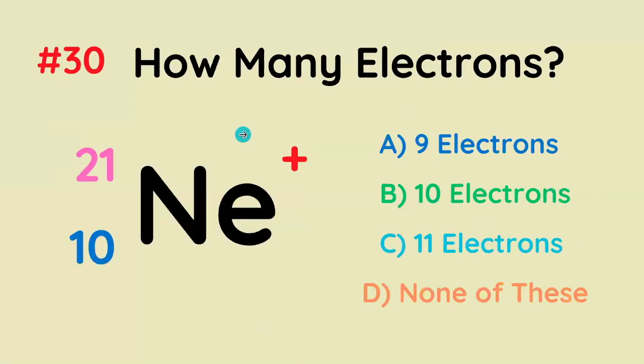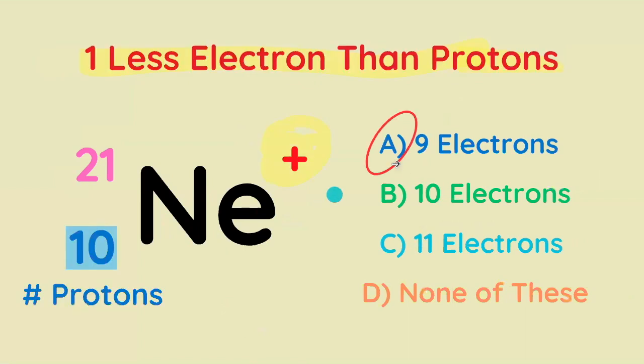How many electrons does this isotope of neon have? Nine, ten, eleven, or none of these? Nine, because if it has a positive one charge and there are ten protons, it's got to have one less electron.